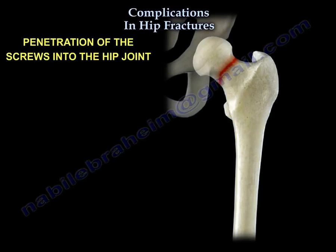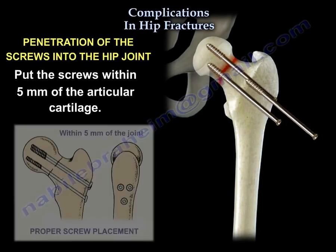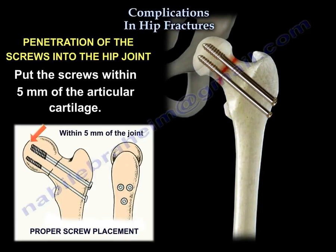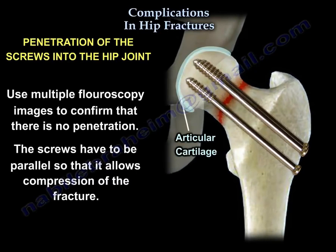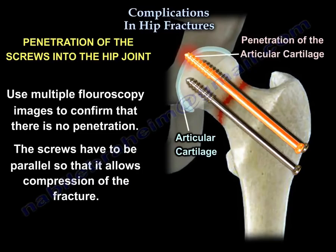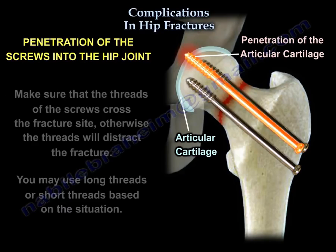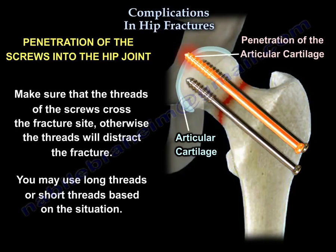Another complication is penetration of the screws into the hip joint. Place screws within five millimeters of the articular cartilage. Use multiple fluoroscopy images to confirm no penetration, and screws must be parallel to allow compression of the fracture. Make sure the threads of the screws cross the fracture site — otherwise the threads will distract the fracture. Use long or short threads based on the situation.